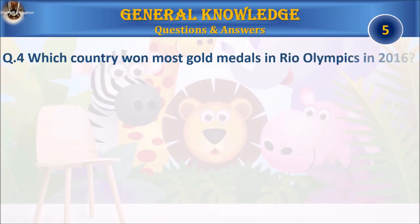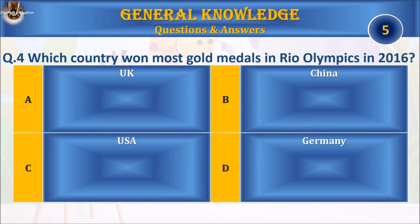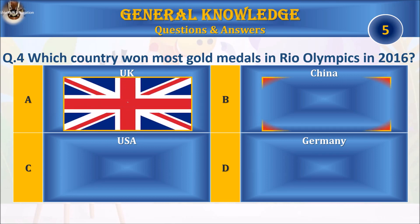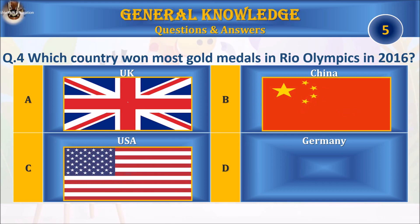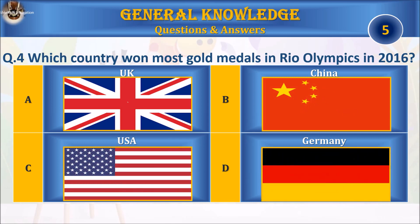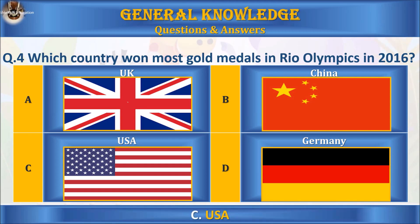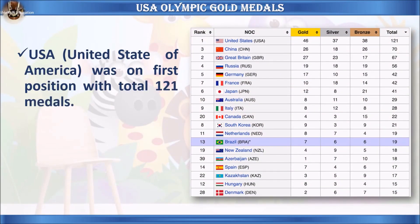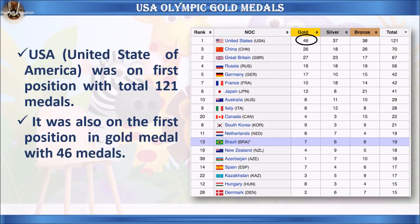Question 4. Which country won the most gold medals in the Rio Olympics in 2016? A. UK, B. China, C. USA, or D. Germany? Your time starts. The answer is C. USA. The United States of America was in 1st position with a total of 121 medals, and was also 1st in gold medals with 46.